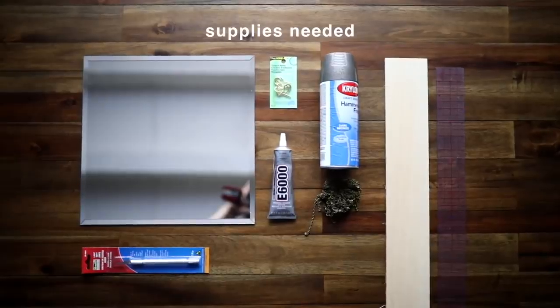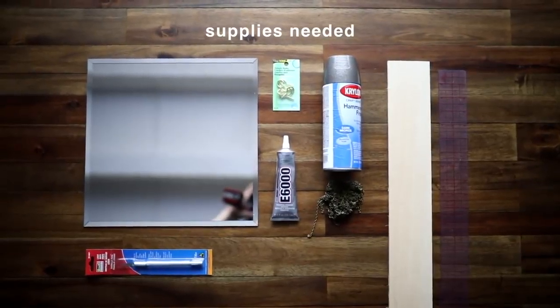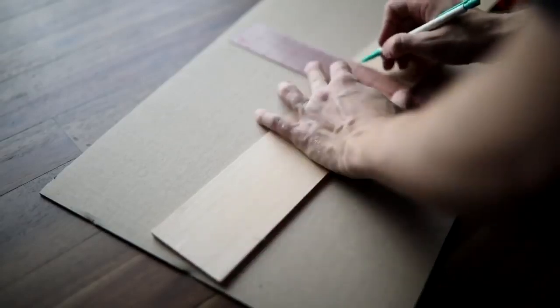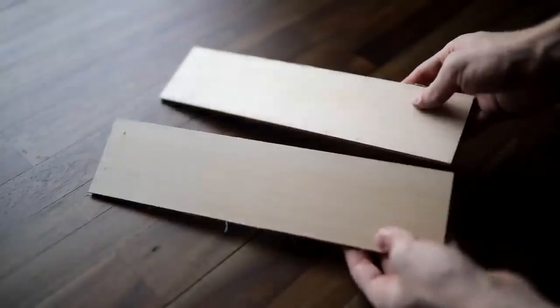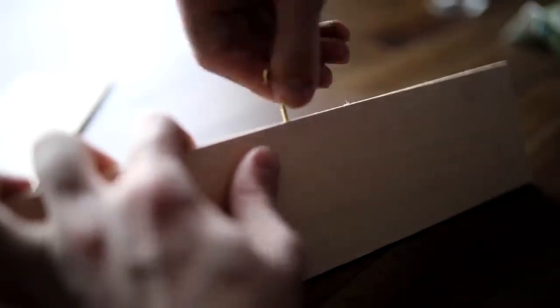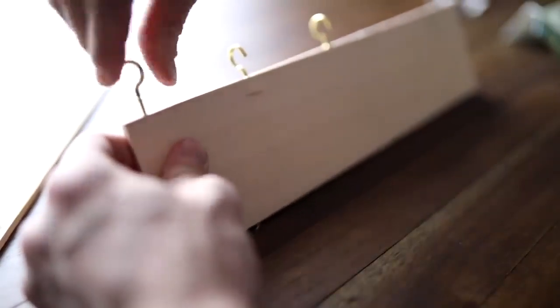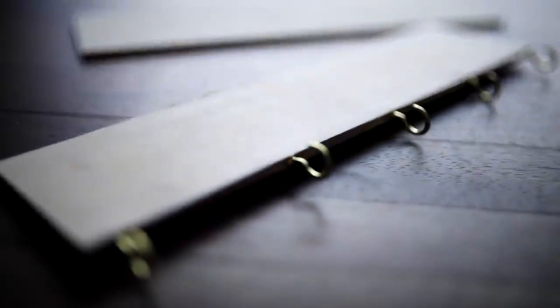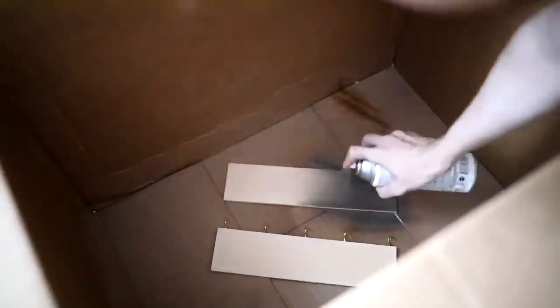For the hanging mirror DIY you're going to need a square mirror, some E6000, an exacto knife, some chain, spray paint of choice, a piece of wood, ruler and some screw hooks. What you're going to start off by doing is taking a small piece of wood and cutting it down to 12 inches in width. I just found this 24 inch piece from Michael's for like a dollar fifty and I just cut it directly in half by swiping over it with an exacto knife a few times.